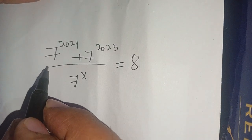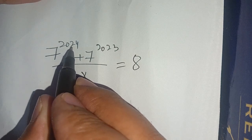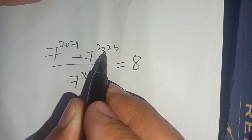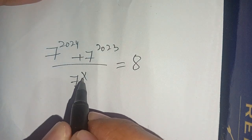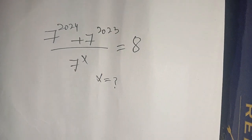Hello everyone, in today's video we are going to solve this exponential equation: 7 power 2024 plus 7 power 2023 divided by 7 power x is equal to 8. We have to find the value of x which satisfies this exponential equation.